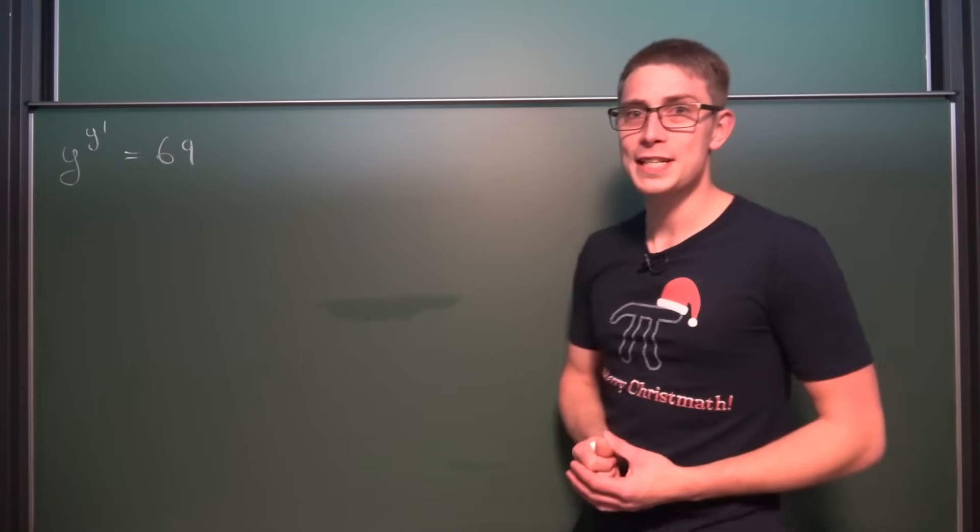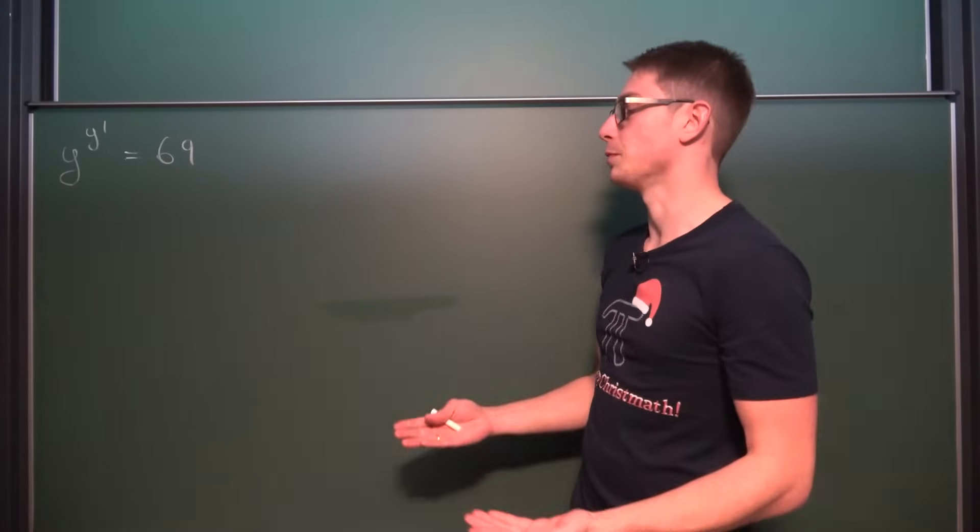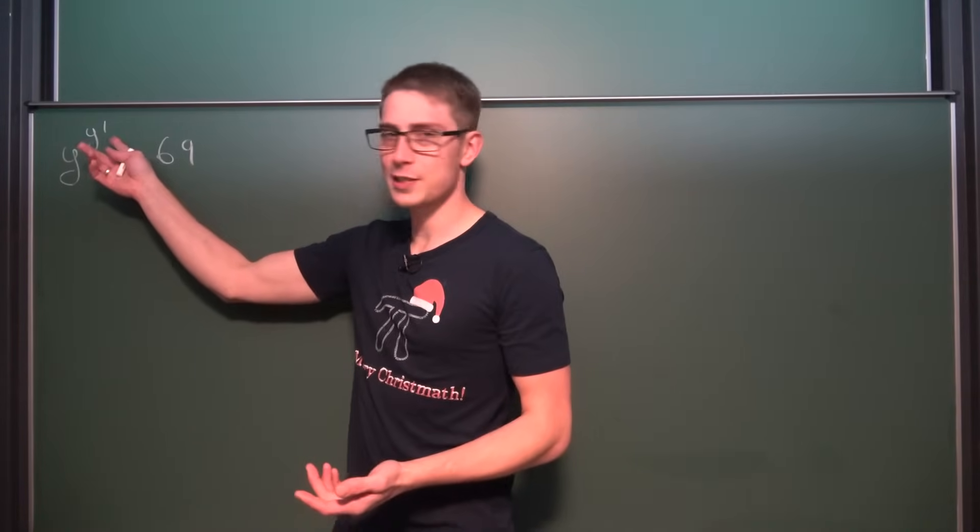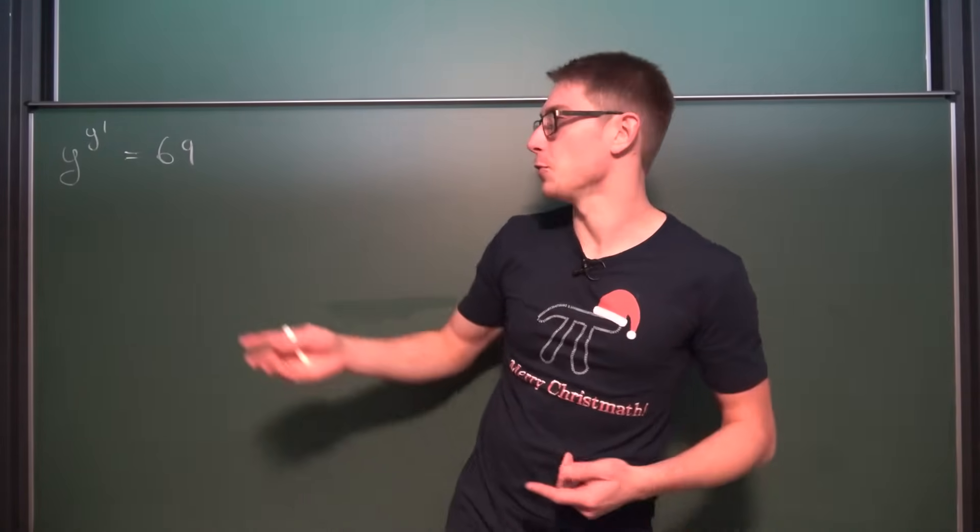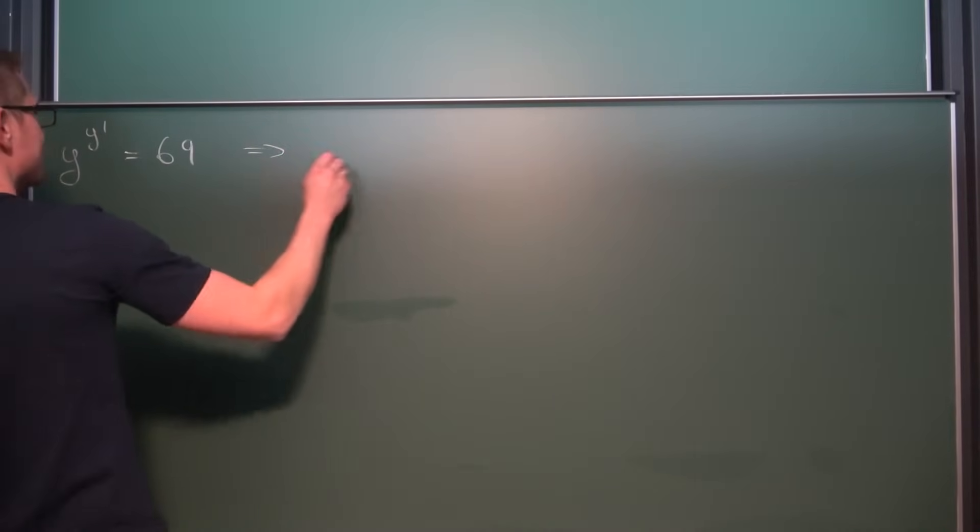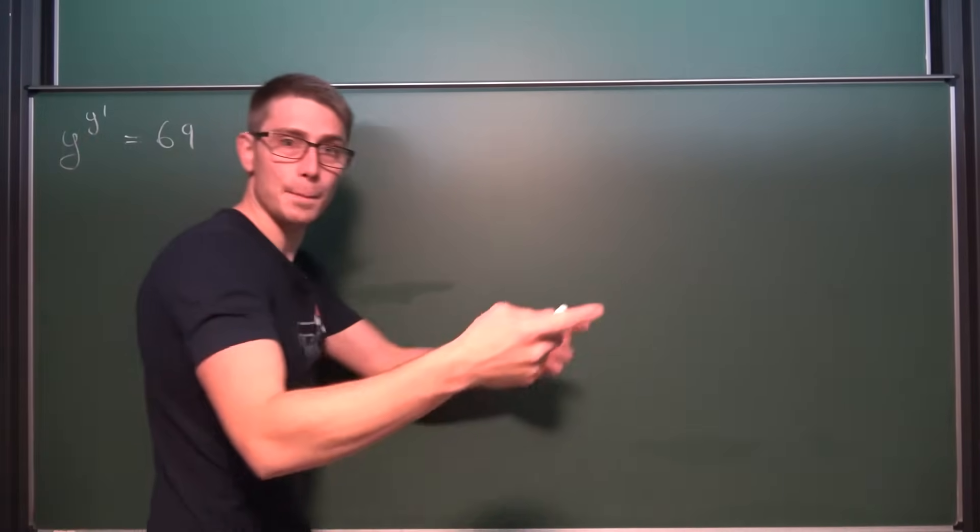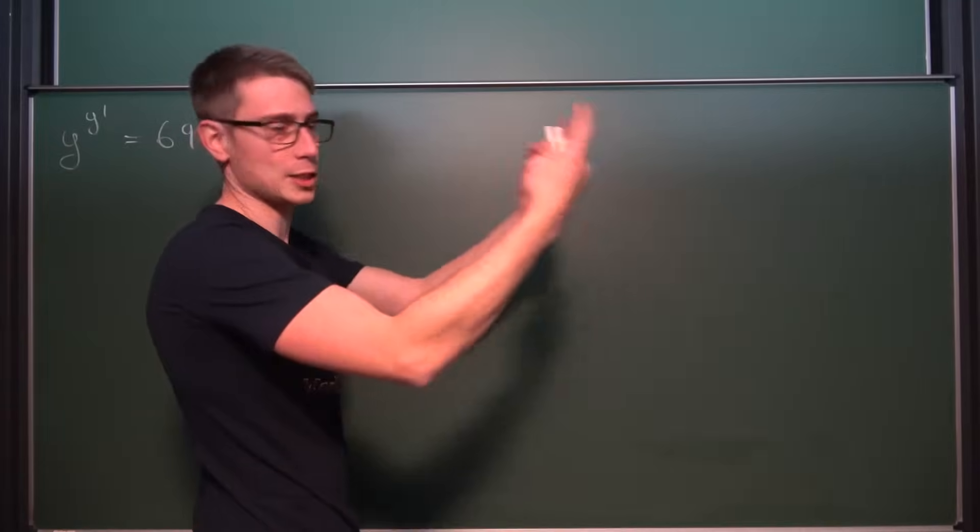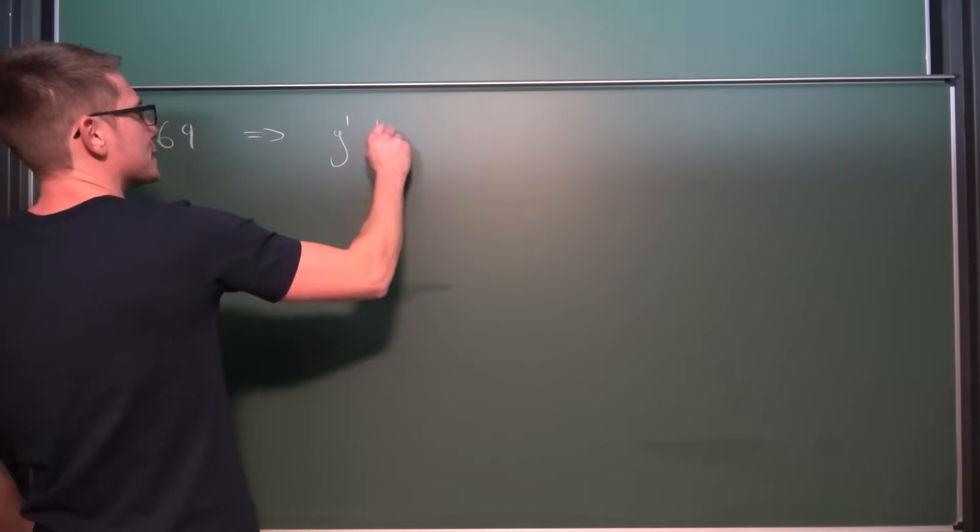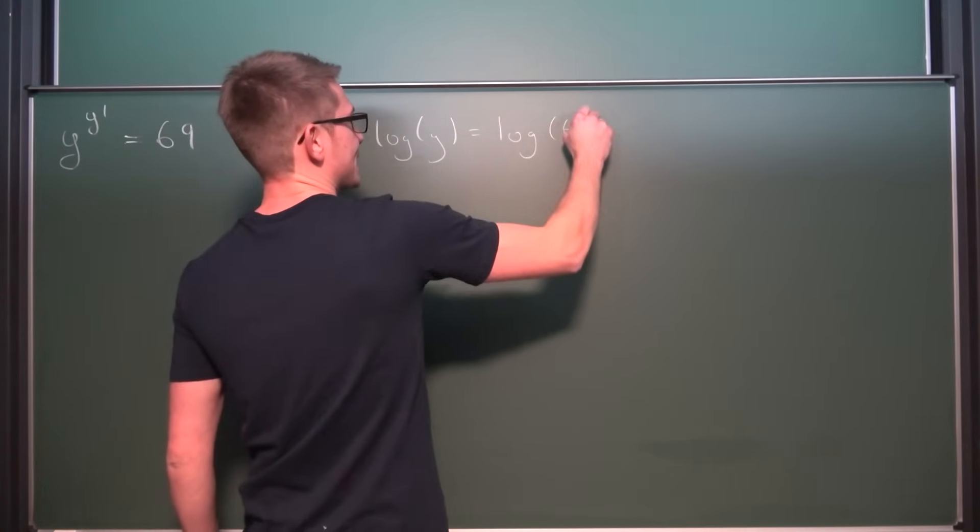So the first logical step to solve this thing right here is to take the logarithm on both sides. At first the natural log. Because we have this thing up here and we want to get it down. So the first thing to do is take the natural log on both sides. Leaving us with the natural log of y to the y prime. But by the logarithm properties we can drag the exponent to the front. Making it multiplicative. So y prime times the natural log of y is equal to the natural log of 69.